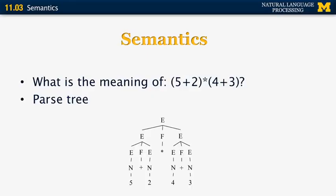We can build this by constructing a parse tree of the arithmetic expression. We have 5 and 2 as numbers that can be converted to expressions. Then we have functors like plus, so we can combine numbers and functors into more encompassing expressions — recursively until we get the top-level E, the value of the expression, which is equal to 49. We were able to compute this just by applying recursive principles to the original expression.